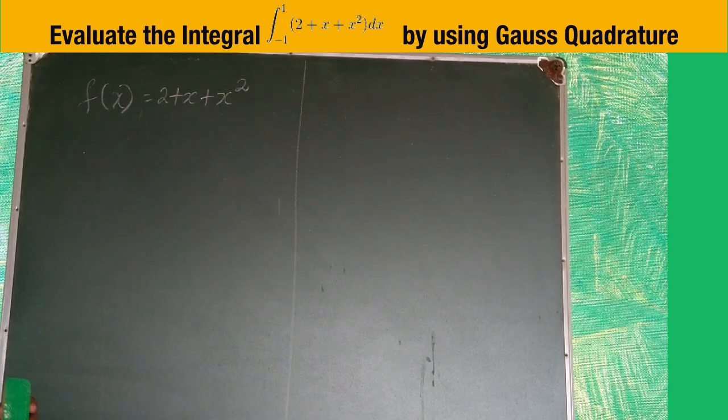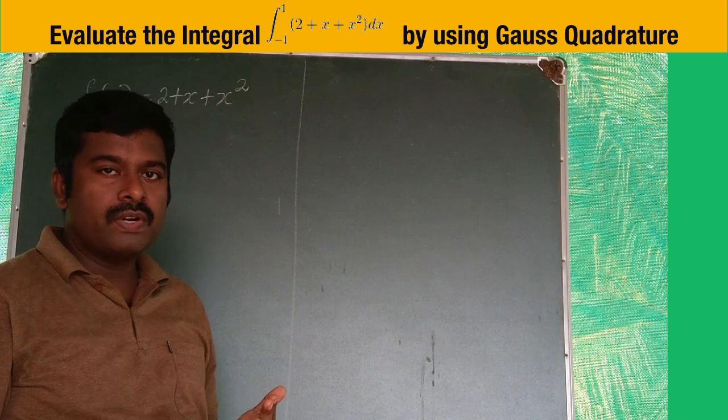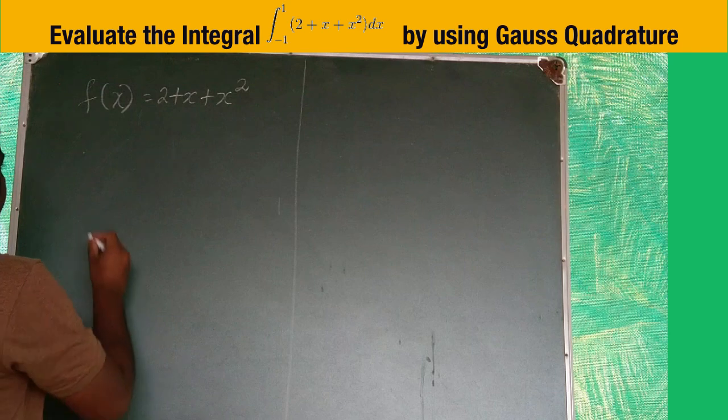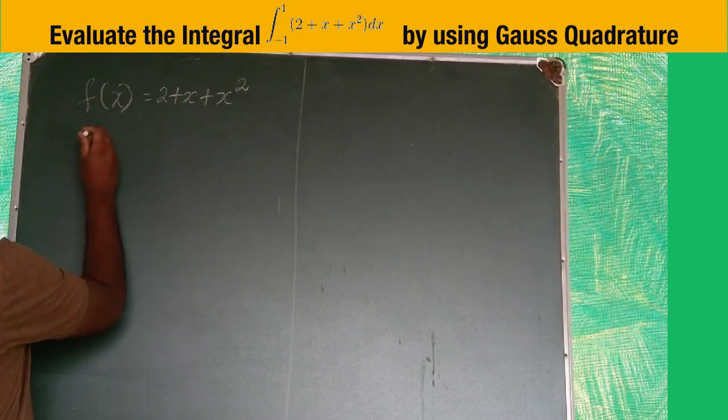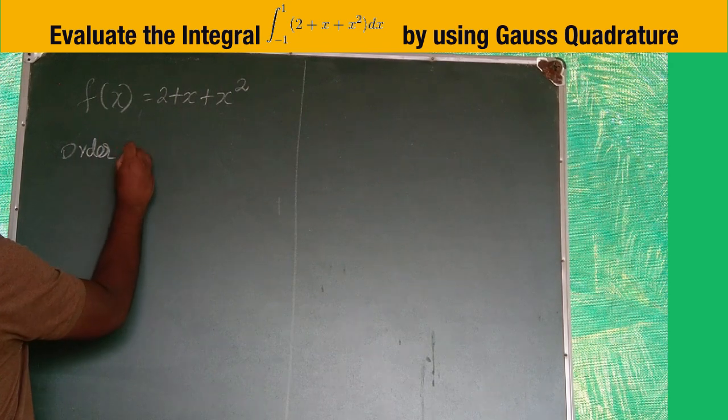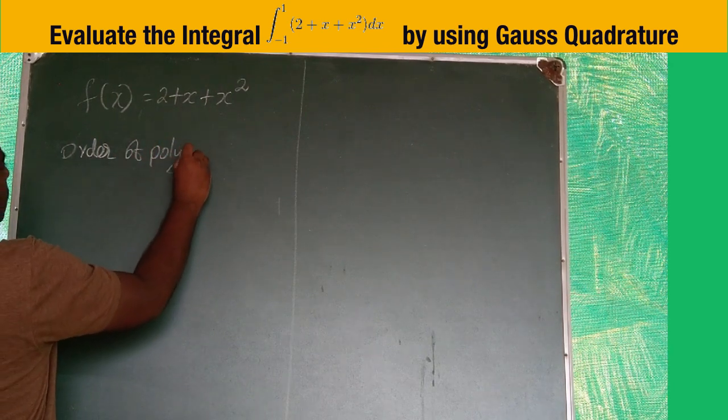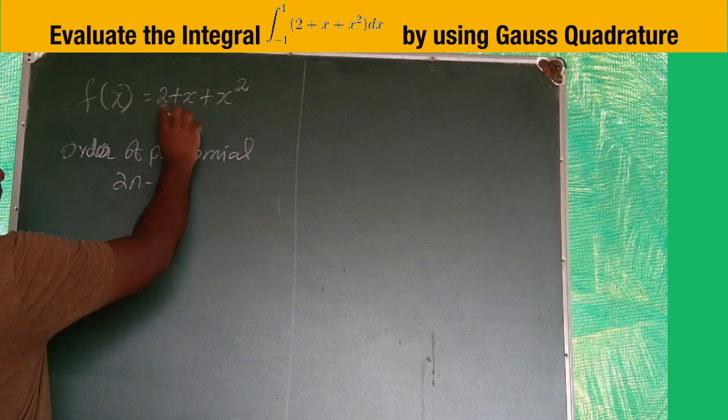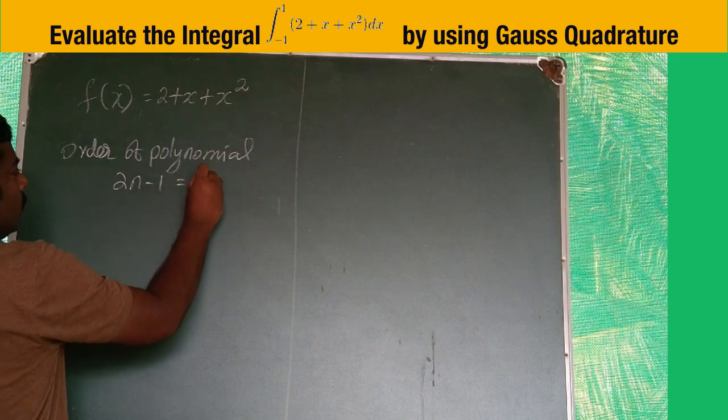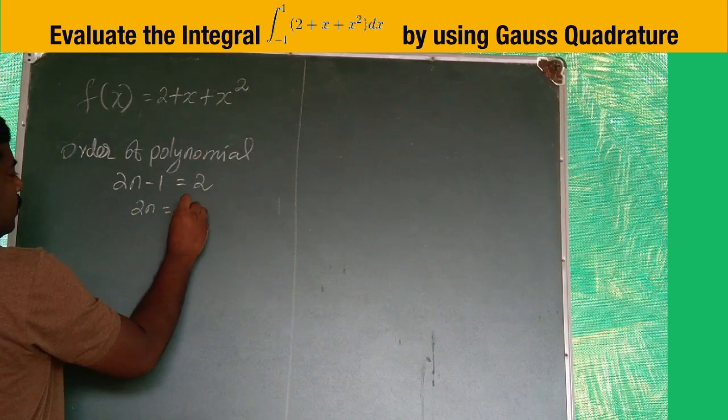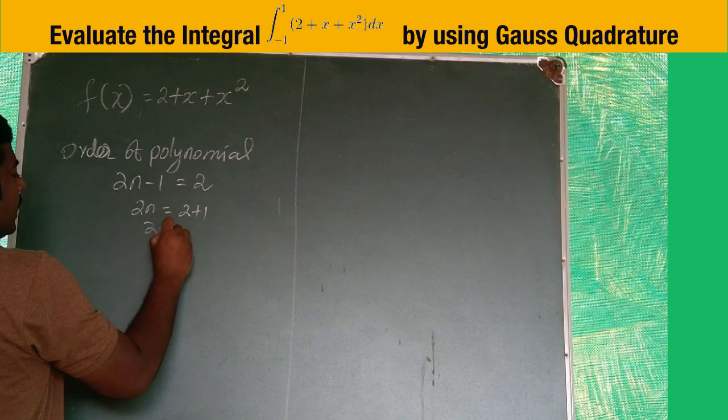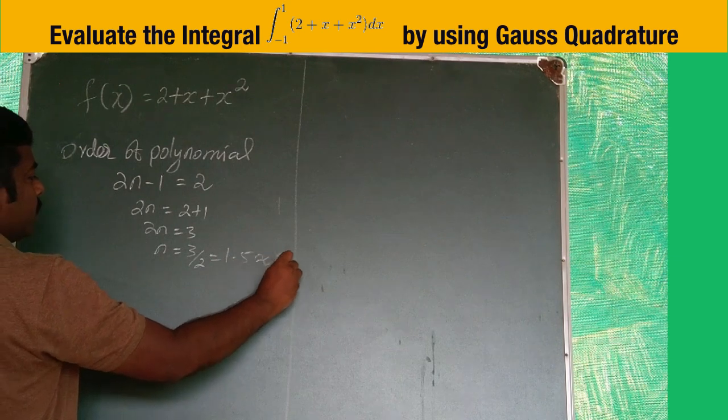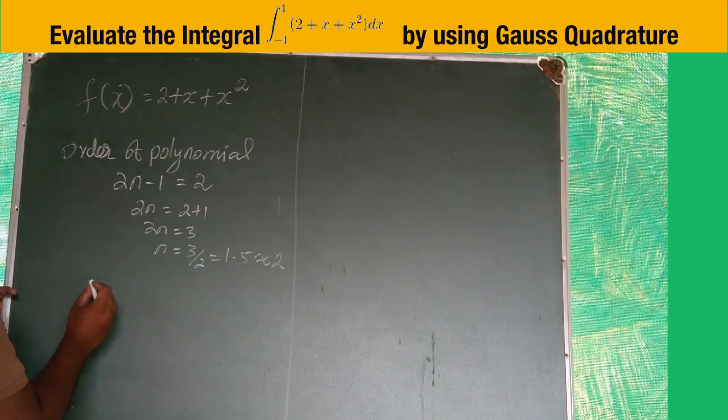In this question, it is not mentioned whether to use the 2-point or 3-point Gauss quadrature formula. Therefore, we find the order of polynomial: 2n - 1 equals the highest degree. Here, the highest degree is 2. Solving this equation: 2n = 2 + 1, so 2n = 3, n = 3/2 = 1.5, approximately 2. Therefore, we use Gauss 2-point formula.